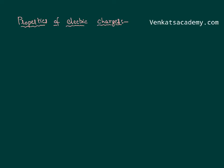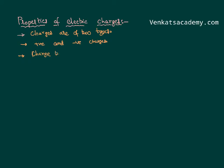Hello everyone. Today in this video lesson we would like to talk about properties of electric charges. As we have already discussed in the previous post, charges are of two types: positive and negative charges. When one body is rubbed with the other, charges get transferred from one body to another. This phenomenon is called charge transfer by friction.